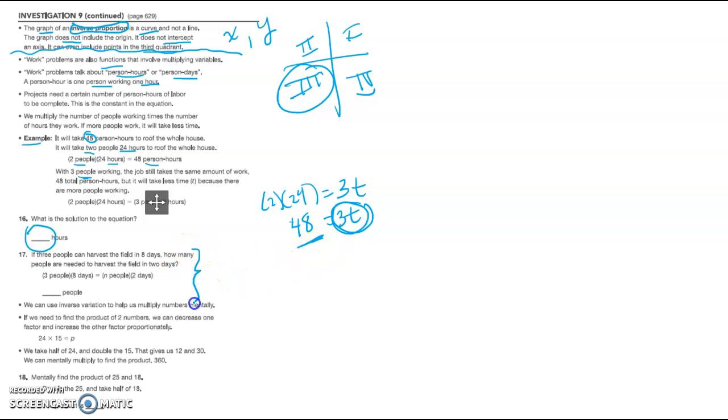You have an opportunity to practice that here. Three people, eight days, so 3 times 8 is equal to how many people for two days, and you're going to solve for n.